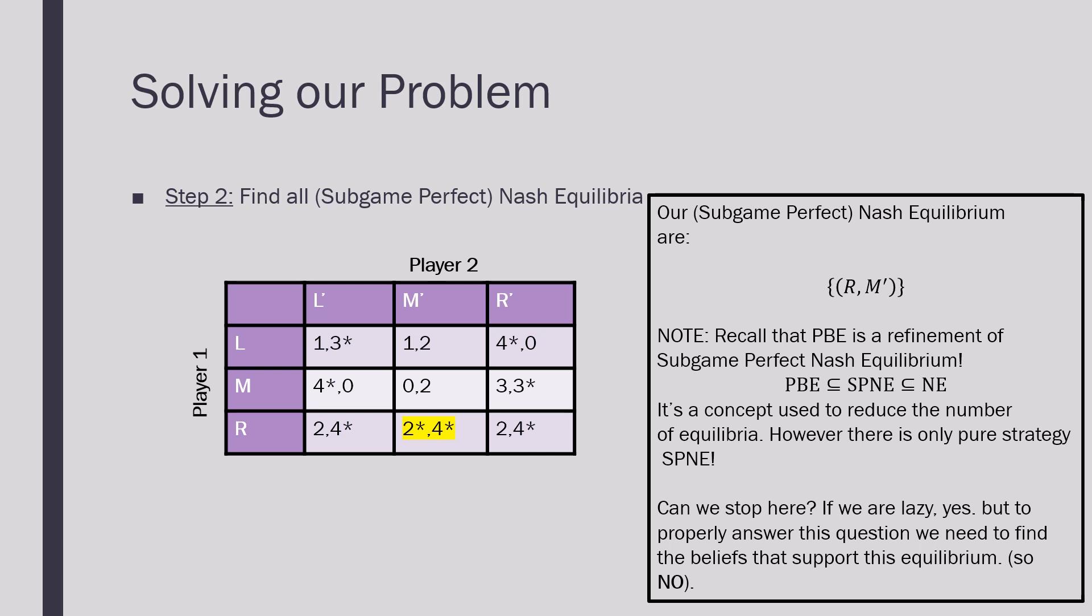So the question that we want to ask naturally is, can we stop here? And I'd say, if we're lazy, yes. However, a Perfect Bayesian Equilibrium is going to be a set of strategies supported by a belief. So we need to still solve for the beliefs that support this equilibrium. So we're going to say that the answer to this will be no.